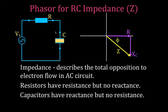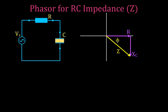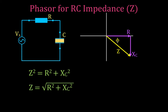We also have the phase angle on the impedance triangle, and it should be the same angle you got from the voltage triangle — you can use that to check your work. Using the Pythagorean theorem: Z squared equals R squared plus XC squared, so Z equals the square root of R squared plus XC squared. The phase angle phi is calculated using arctangent: phi equals arctan of XC divided by R.